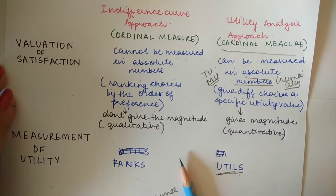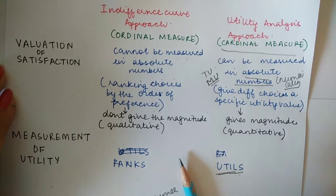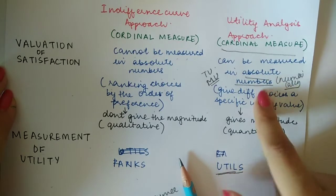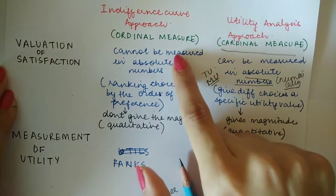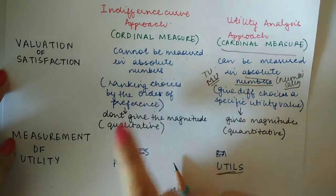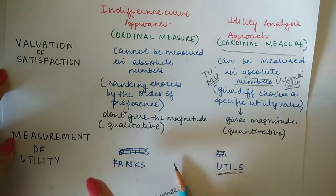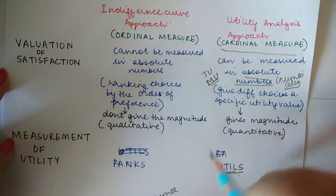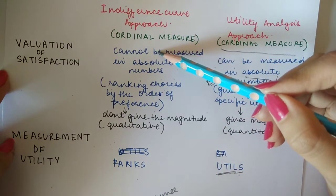That is the difference between the two measures of utility. Cardinal measures can be calculated in absolute numbers. Ordinal measures cannot be measured in absolute numbers but are ranked. The measurement of utility is in utils for cardinal and ranks for ordinal. This is the main difference between the two approaches.